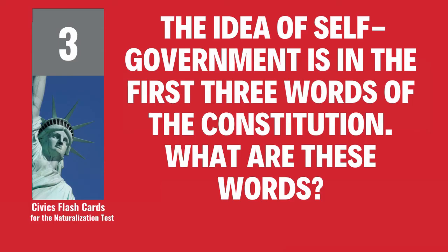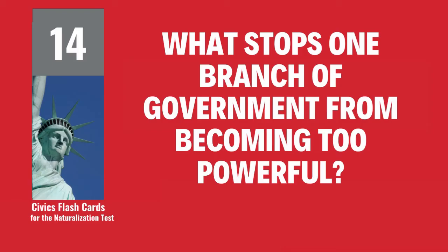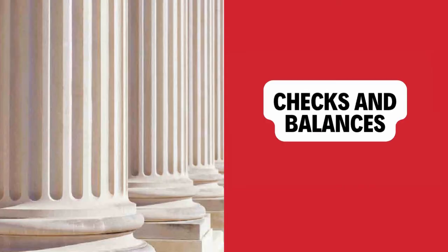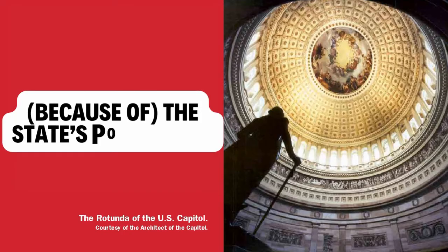The idea of self-government is in the first three words of the Constitution. What are these words? We the people. What stops one branch of government from becoming too powerful? Checks and balances. Why do some states have more representatives than other states? Because of the state's population.